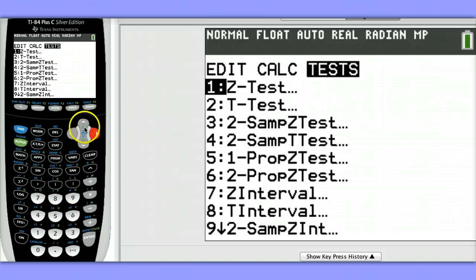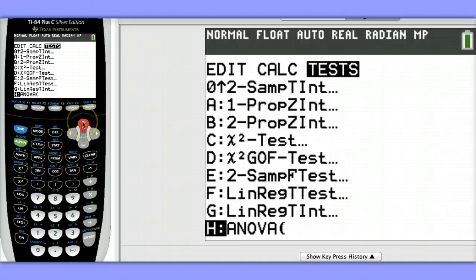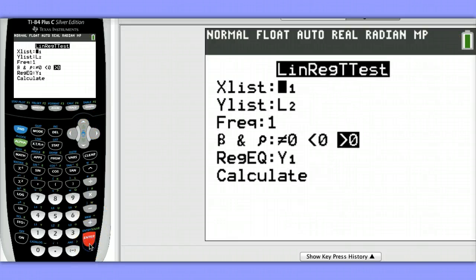And since I know that's at the bottom of my list, I'm going to hit the up arrow to get there more quickly. My X's are stored in List 1. My Y's are stored in List 2. That's correct. I don't have to change those. My Frequency is 1.